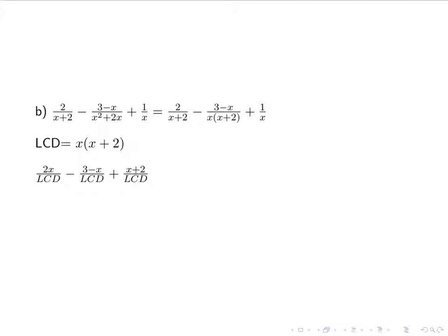So again, I look at my first factor, my first term. I have the x plus 2, so I need the x, so I end up with 2 times x. For my second one, I have all of the LCD, so my numerator stays the same. And for my last one, I have the x, I don't have the x plus 2. So 1 times x plus 2 is x plus 2.